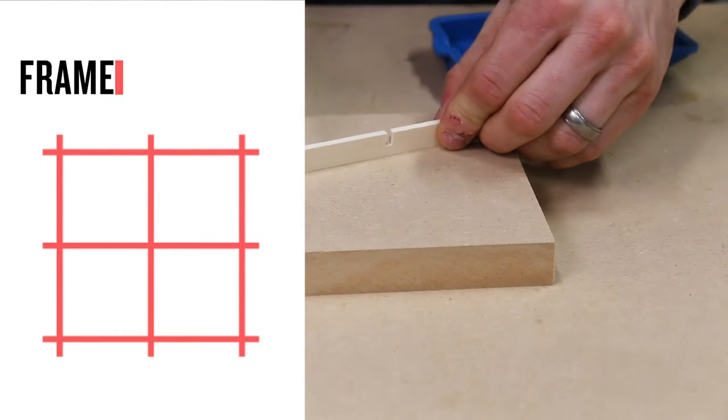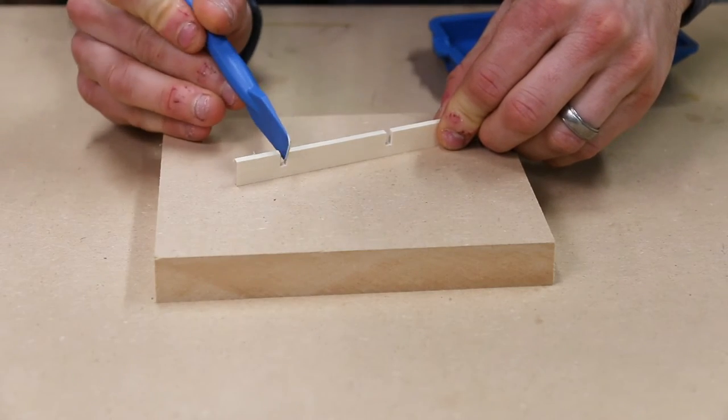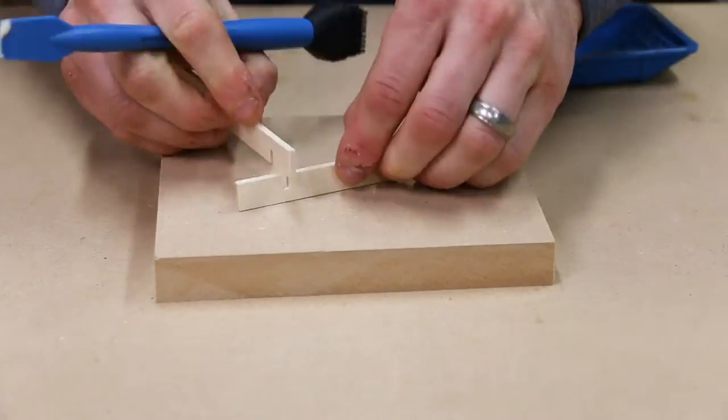The first step is to glue the frame together. I use a dab of glue at each crosslap and glue it on a piece of MDF so it stays flat.